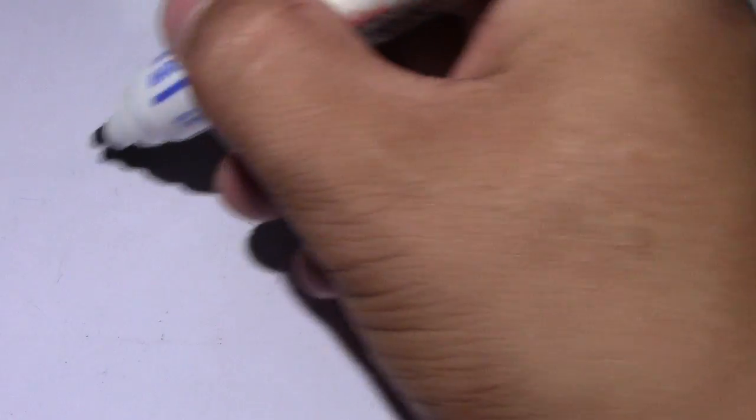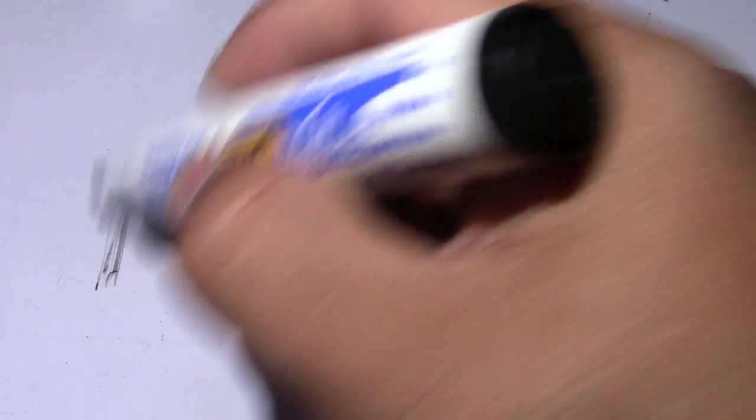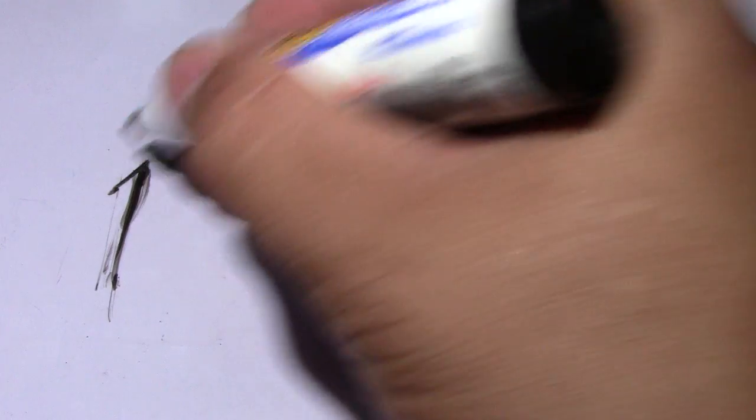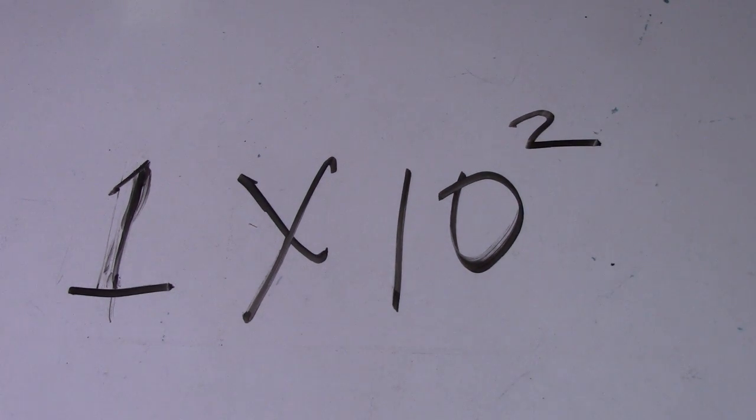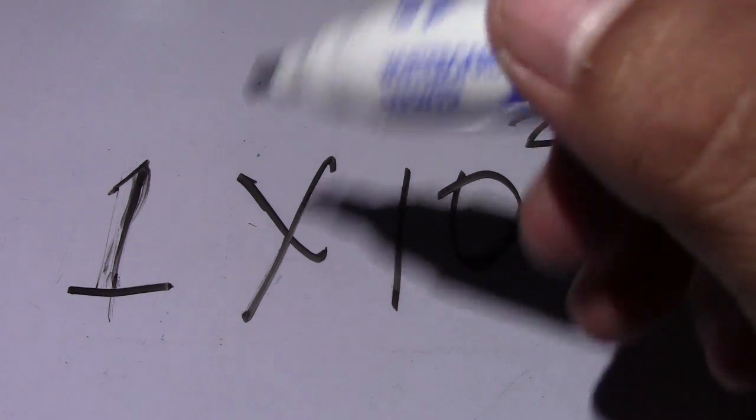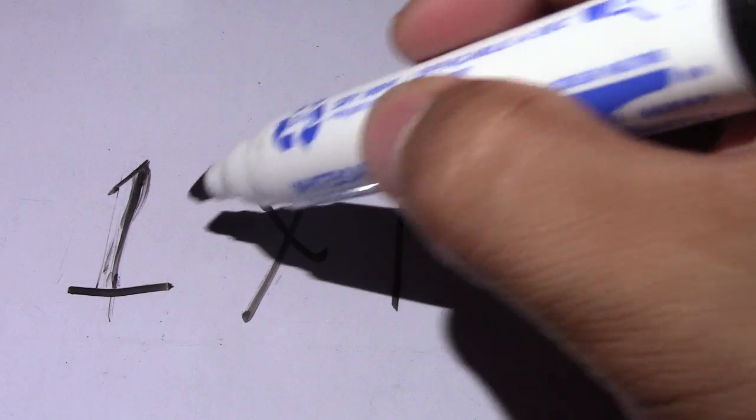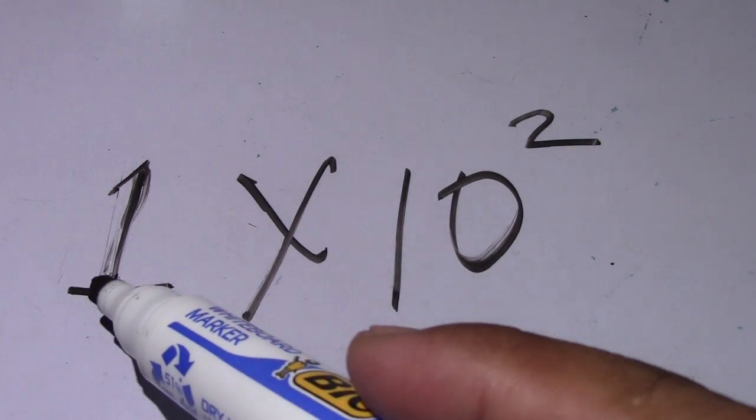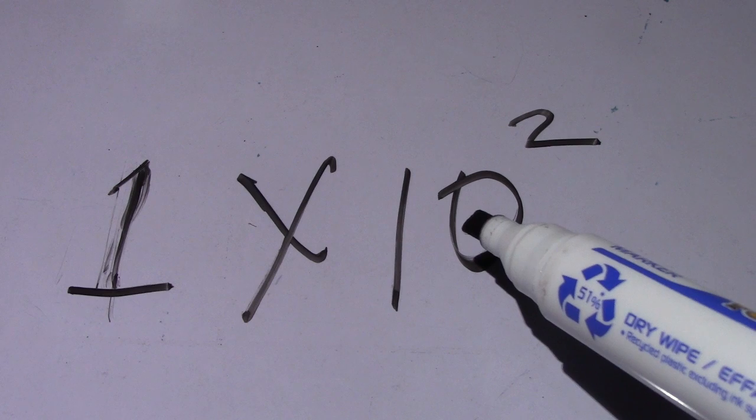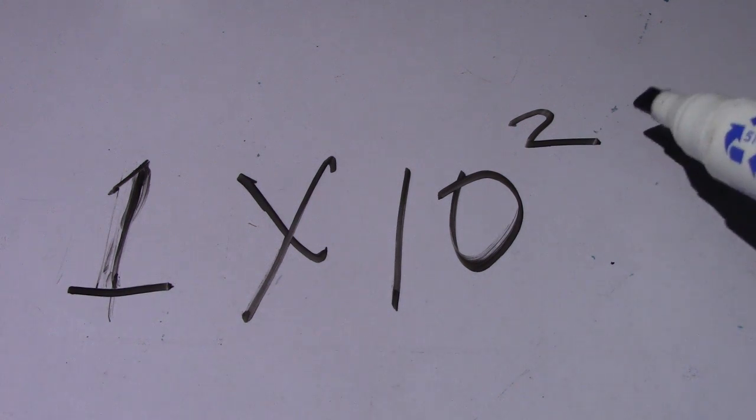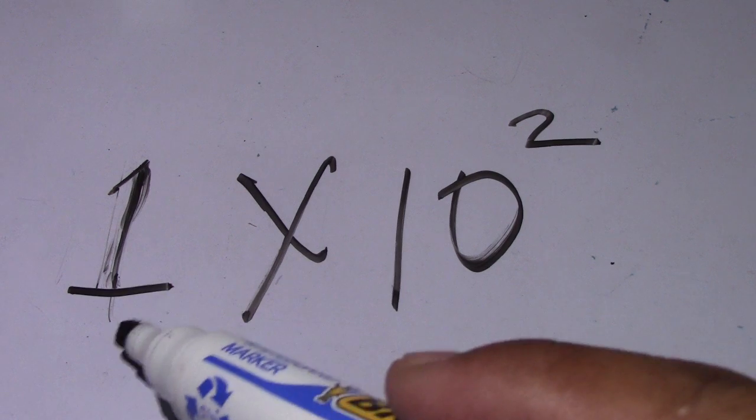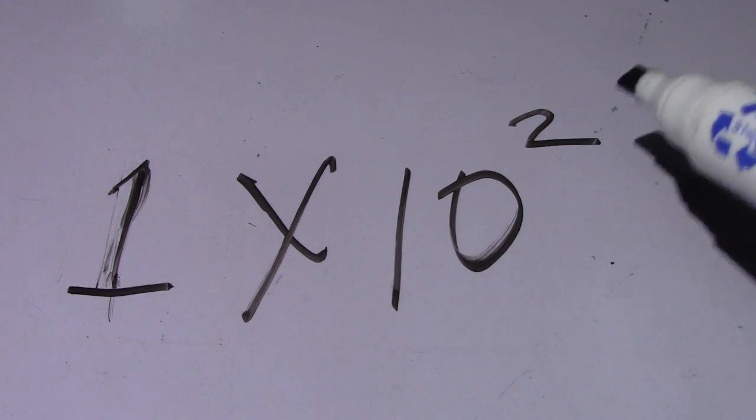This is number one multiplied by 10 squared. So this number one is the root number, number 10 is the base number, and number two is the exponent. So root, base number, and exponents.